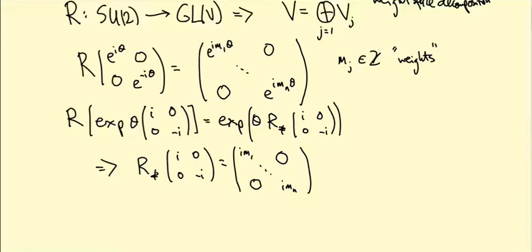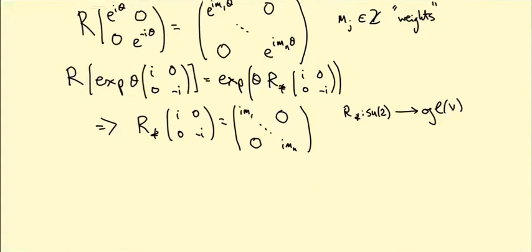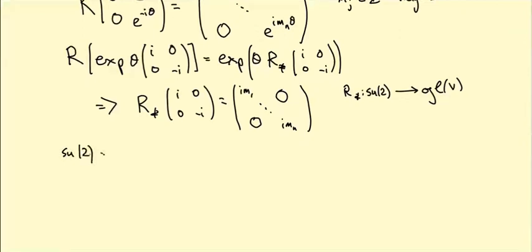So in other words, we know one of the matrices in our algebra, where it goes under this algebra homomorphism from little su(2) to little gl(V). So we know where the (i, -i) diagonal matrix goes. But there are other matrices, right? Little su(2) is the set of matrices (ix, y+iz, -y+iz, -ix) where x, y, and z are real numbers. And all I'm telling you is where this x variable goes basically. There's still the y and z variables to worry about. So what matrices are they going to map to?